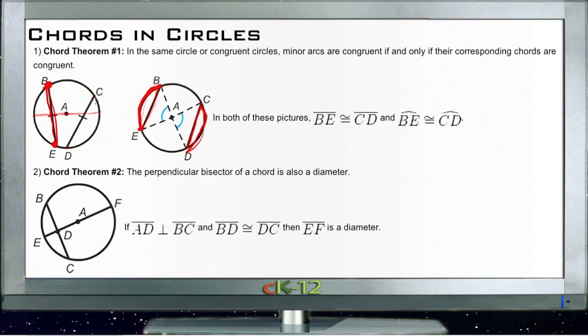And if we knew, for instance, that CD over here, the arc, was congruent to BE, this arc over here, then we would also know that those corresponding chords were then congruent as well.